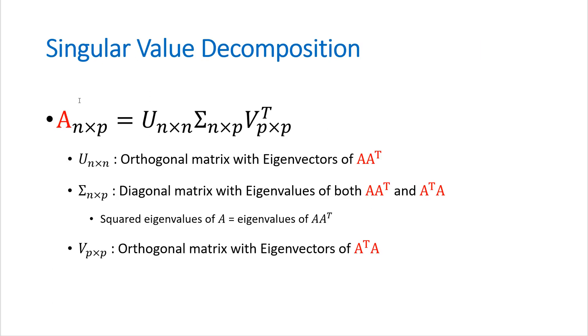Let's move on. Singular value decomposition. A matrix consists of n by p, n observations and p variables can be decomposed by U, sigma and transpose V. And each this matrix has these characteristics.